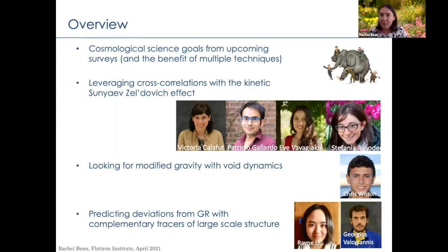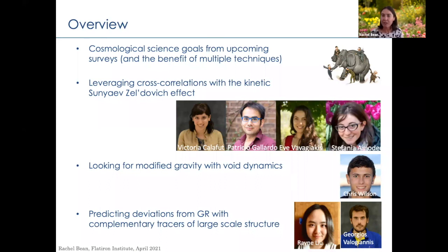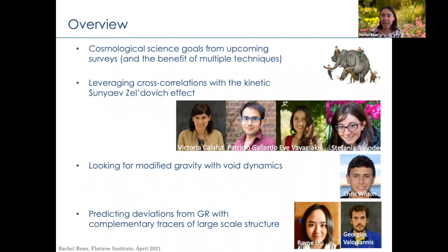What I wanted to do today was give a little bit of motivation about how we can think about using large-scale structure surveys and CMB surveys in ways that go beyond the standard and conventional ways we have been thinking about using those data, particularly in the context of looking at dark energy and testing gravity on cosmic scales. I'm going to try to give you a taste of three recent papers that came out in December and January, led by graduate students, postdocs, and undergraduate students working at Cornell.